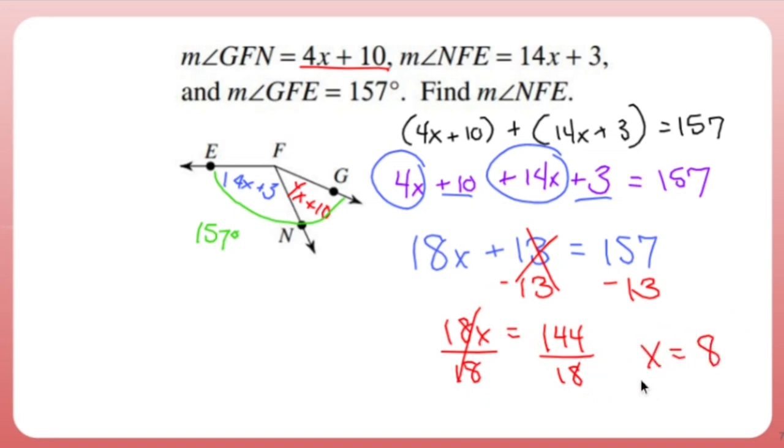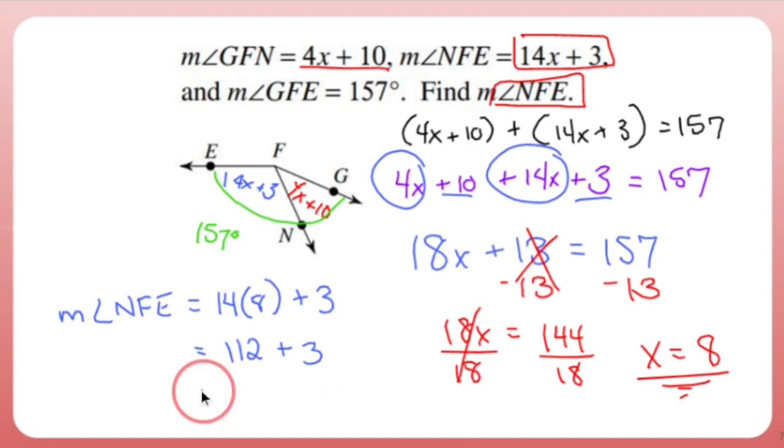Of course, I did that in my head and I didn't pause the video so I could ask Siri to do it for me. X is 8. Are we done? No. It's not asking me to find X. It's asking me to find NFE. NFE is 14X plus 3. So the measure of angle NFE is going to be 14 times X, which is now 8. 14 times X is 112. Again, I didn't ask Siri and pause the video. I just did it in my head. 112 plus 3 means the measure of angle NFE. I keep wanting to write NFL, but I didn't. It's 115.